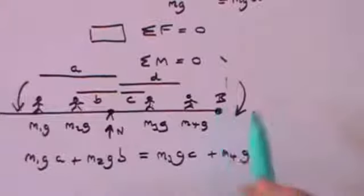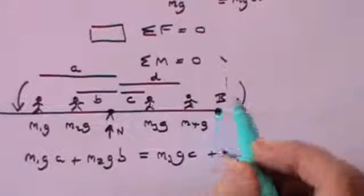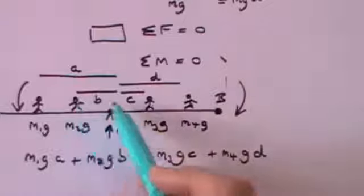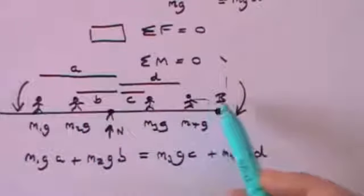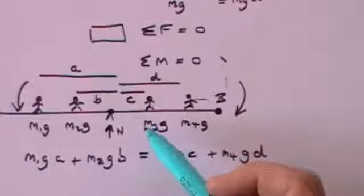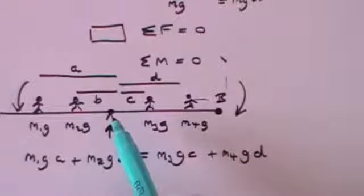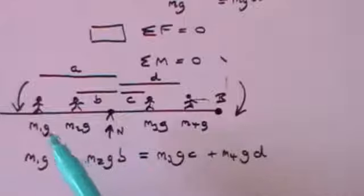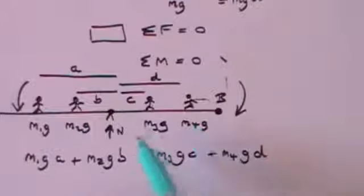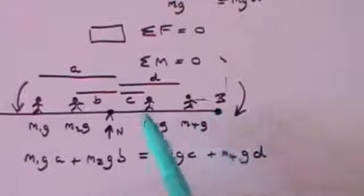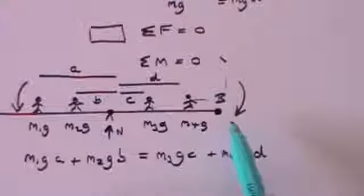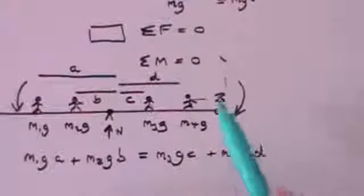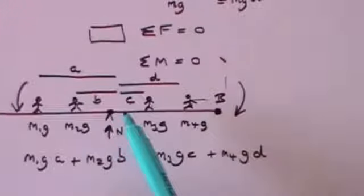So choose your pivot point carefully so that you can dispense with some of the forces. If we are unwise enough to pick a different point as pivot, then we have to include each force times its distance, all acting in an anti-clockwise direction, minus n times its distance, which is half the length of the seesaw. N equals m1g plus m2g plus m3g plus m4g, times the distance from n to the selected pivot point b. And that will come out exactly as before. But it is wise to pick your pivot point where it makes most sense.